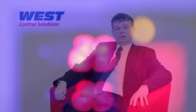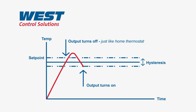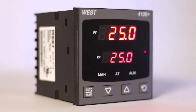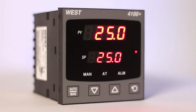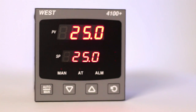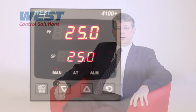The on-off switching differential is the distance between the on point and the off point as the process crosses the set point. It is at least one least significant digit wide, which is normally either 0.1 of a degree or 1 degree, but can be adjusted to a wider amount if appropriate.